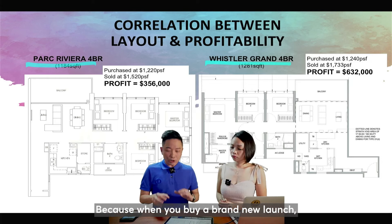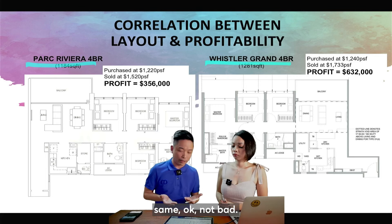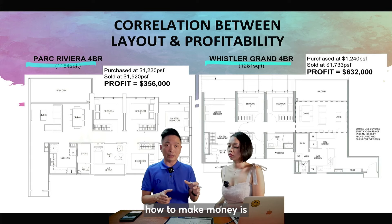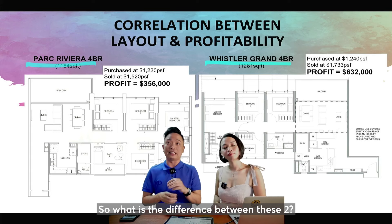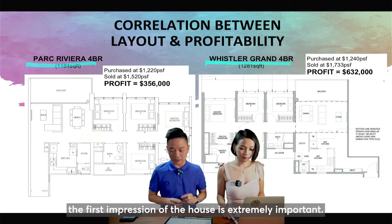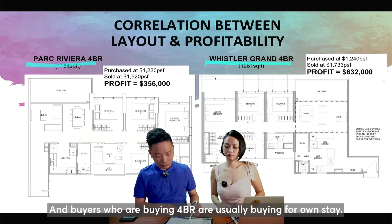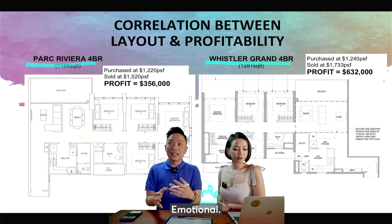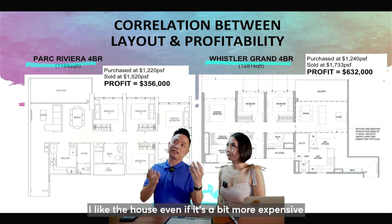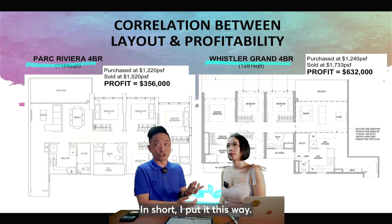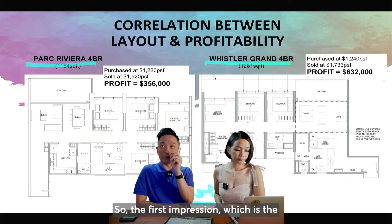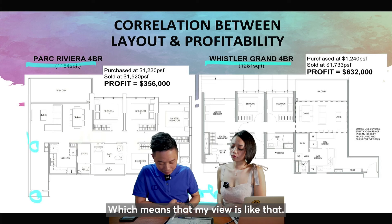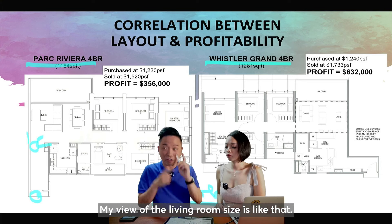When you buy a brand new launch, you look at the floor plan and it looks fine. But in resale, many other factors matter. You need to imagine your resale buyer walking in. For four-bedroom buyers, they're almost always buying for own stay — so emotions and first impressions matter enormously. The first impression depends on your entry point. In Park Riviera, when you walk in, the corridor is narrow, so your vision is restricted until you reach the main area.